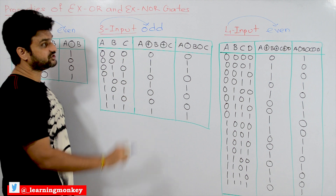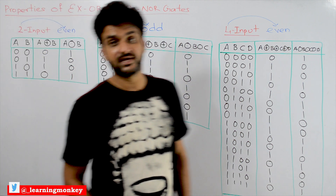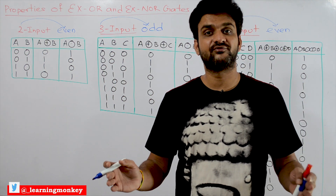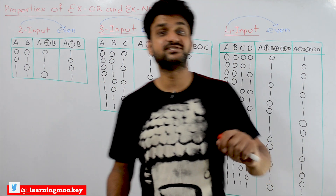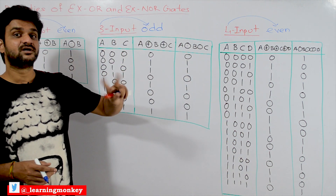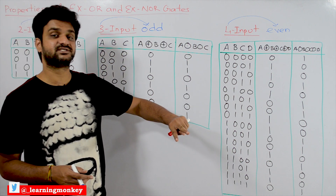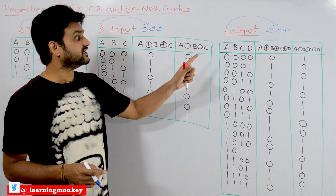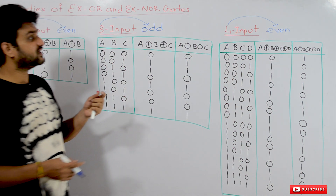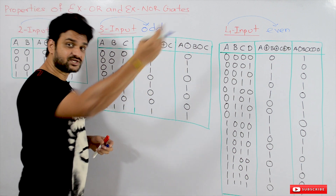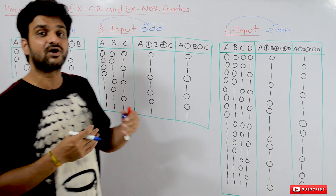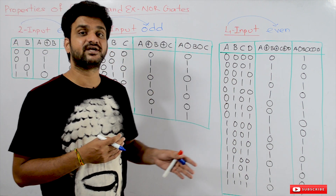That is the important property to understand. Whenever questions are asked, for example to find the output of a six-input XOR gate, it is easy to apply: six inputs means XOR and XNOR are going to be complements. To find the output of an XOR gate for six inputs, if the number of ones in the input are odd in number, the XOR is going to generate a one.